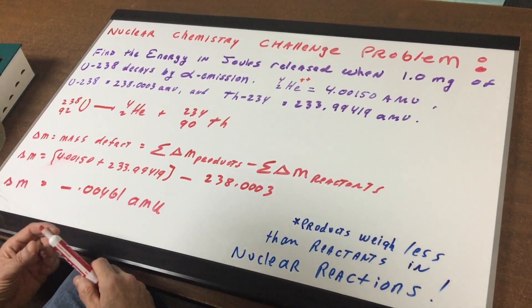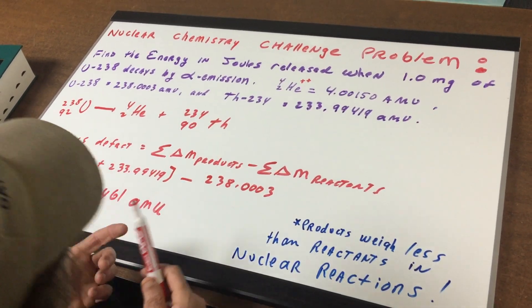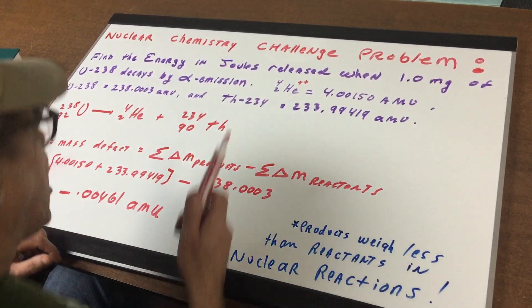And that is the mass defect, which comes out to be negative .00461 AMUs. Now, the question is, what can we do with this mass defect? The mass defect is going to be converted into energy. So I'm going to come to the board and look at how I finish this out.